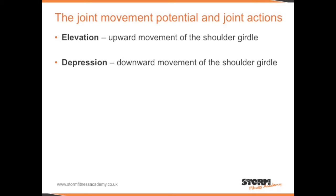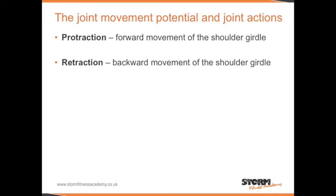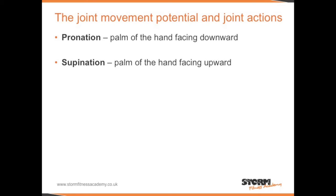Circumduction is a circular or cone-shaped movement, available at ball and socket joints. Elevation is the upward movement of the shoulder girdle. Depression is the downward movement of the shoulder girdle. Protraction is the forward movement of the shoulder girdle. Retraction is the backward movement of the shoulder girdle. Pronation is the palm of the hand facing downward.